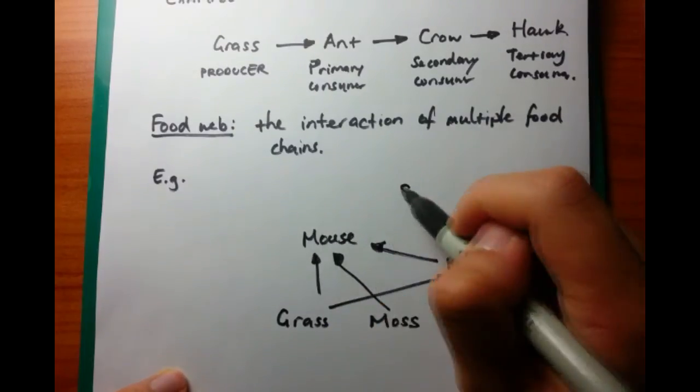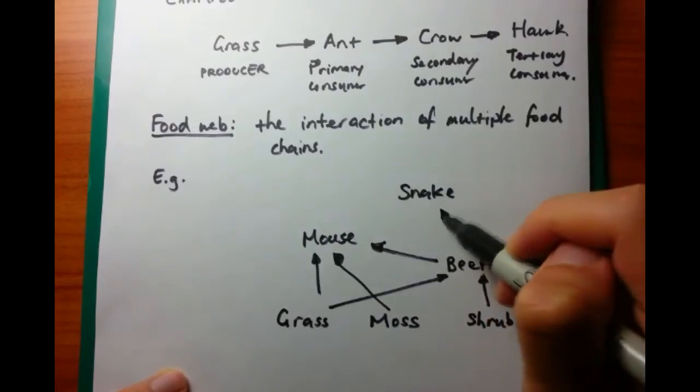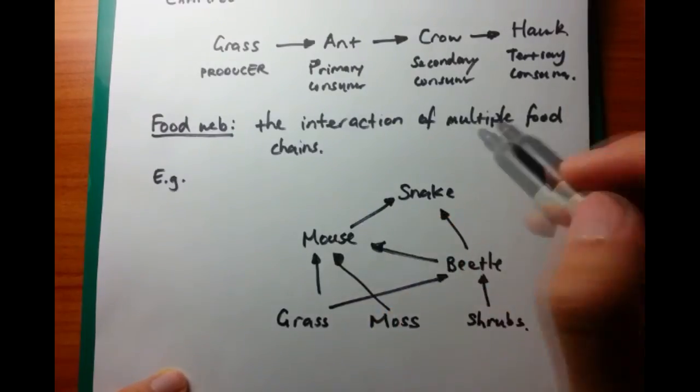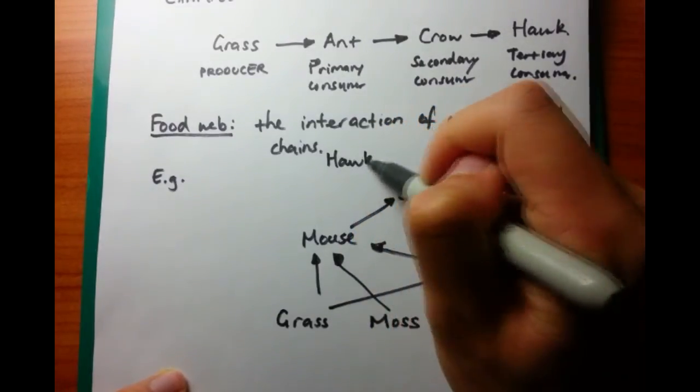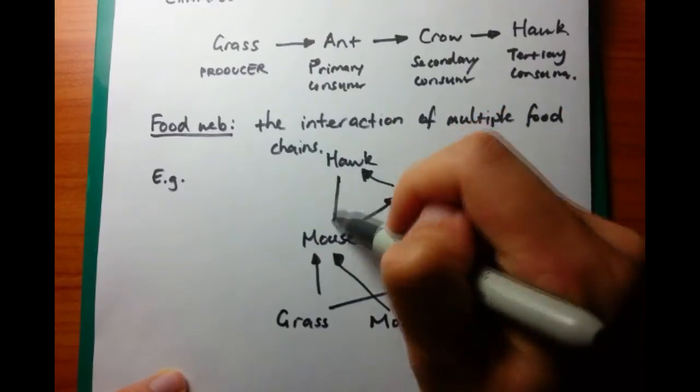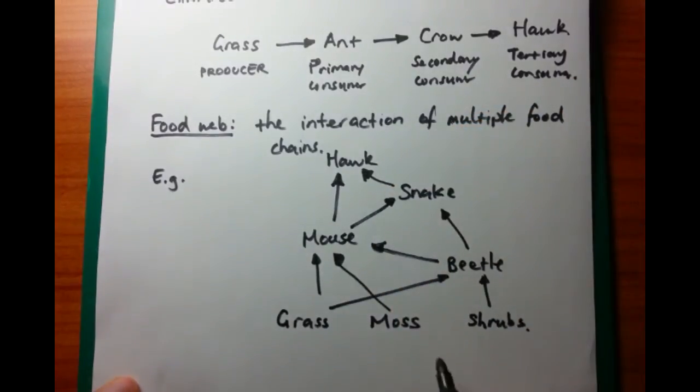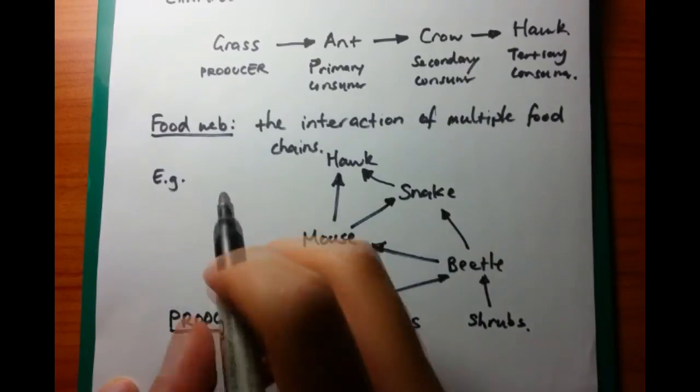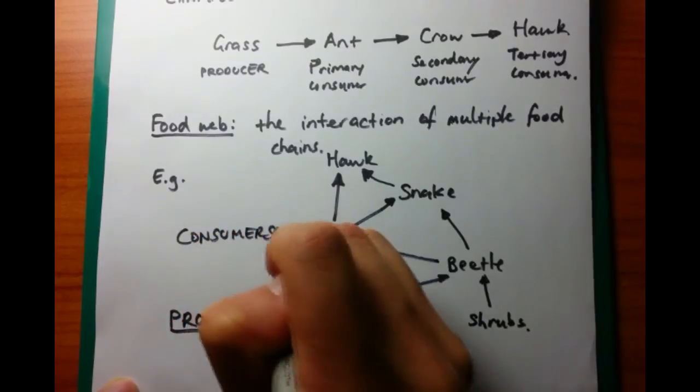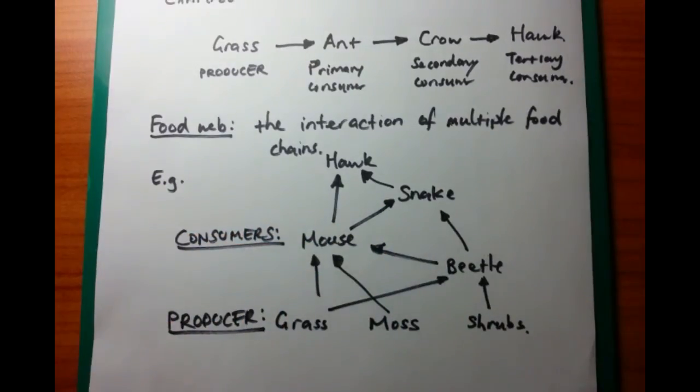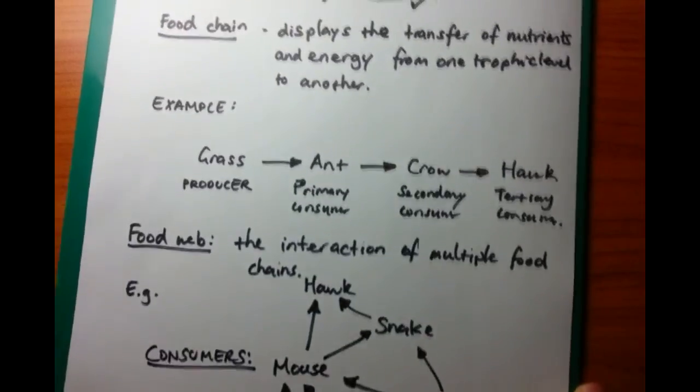Then at the top, you want to have multiple consumers. And then these consumers can be both primary and secondary consumers at the same time. For example, a mouse is a primary consumer because, in this case, it eats moss and grass. But it's also a secondary consumer because it eats the beetle. And just draw these up so then you have about two, three, or four different chains which are interlinking to make a food web.